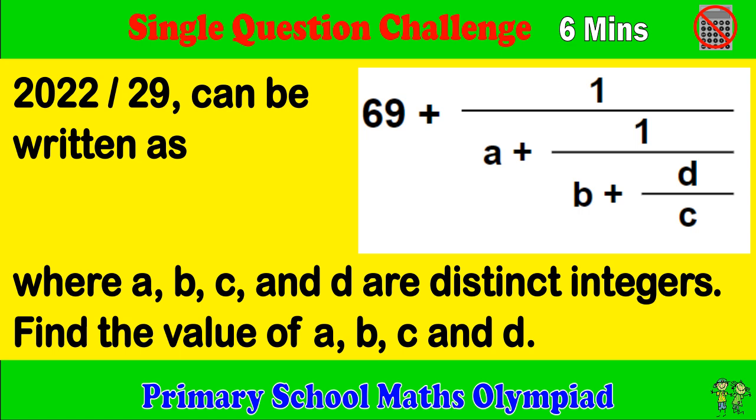2022 over 29 can be written as 69 plus a fraction with A, B, C and D as shown, where A, B, C and D are distinct integers. Find the value of A, B, C and D.